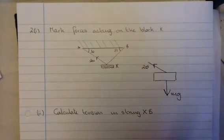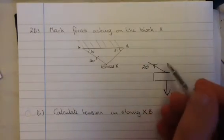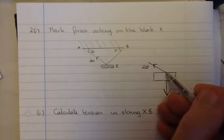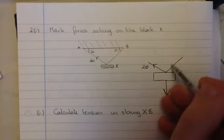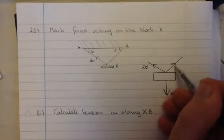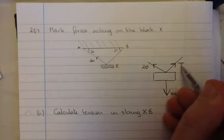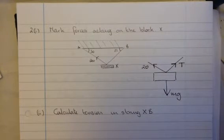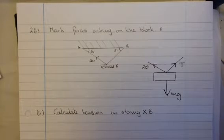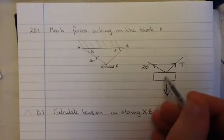Okay, and at the end of this, we have another string attached, XB, which is making an angle of 51. And in that string, you will also have a tension force, we'll call it T. So those are the three forces acting on the body X.